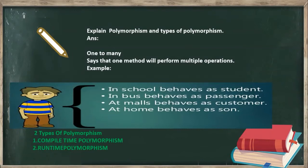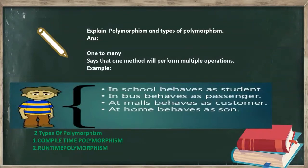There are two types of polymorphism: compile time polymorphism and runtime polymorphism. Compile time polymorphism is also called overloading — same method name with different parameters. Runtime polymorphism is called overriding — same method name, and the method is defined in multiple classes. Overloading happens within a class, while overriding happens across multiple classes.